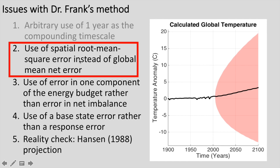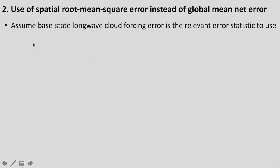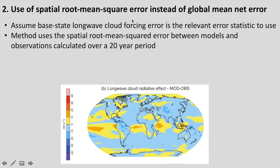Another issue is the choice of using the spatial root mean square error instead of a global mean net error. Assuming for the moment that the base state cloud long-wave forcing error is the relevant statistic to use — which I'll take issue with in the next two points — the method uses the spatial root mean squared error between models and observations calculated over a 20-year period. That means subtracting models from observations gives a plot of long-wave cloud forcing error where some errors are positive and some are negative. Taking the root mean square error squares all the errors first, making them all positive.